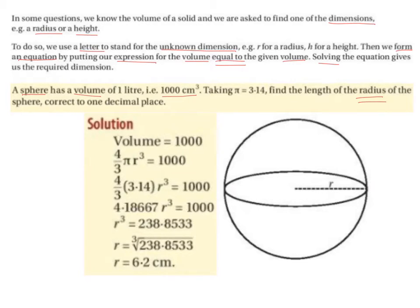And then to get the r on its own, the cubed comes over and becomes cube root. So you get the cube root of 238.8533, and that gives us 6.2 centimeters, because we had our volume as centimeters cubed. So the radius of a sphere with a volume of a thousand centimeters cubed is 6.2 centimeters.